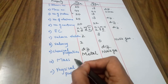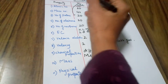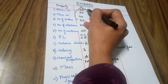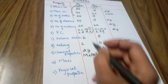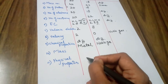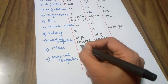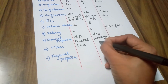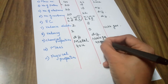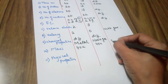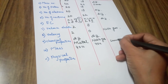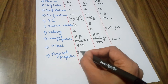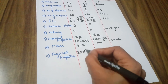Coming to the mass: mass is 40U for calcium and 40U for argon. So the mass is the same for both. If the mass is the same, their physical properties would be similar.